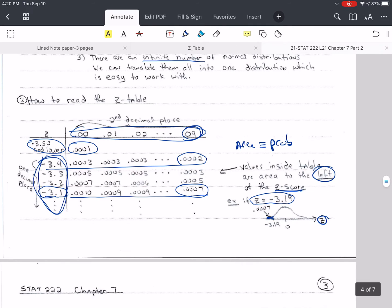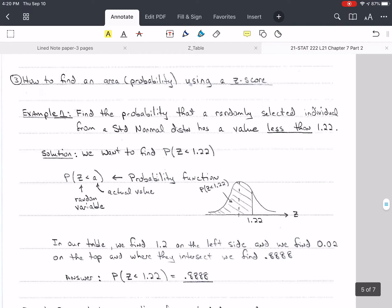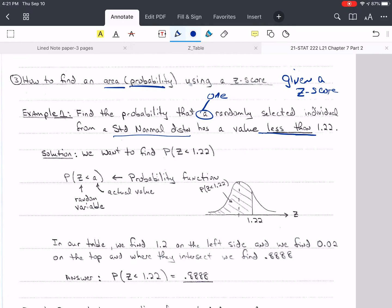So let's do some examples so that we can get used to looking up these values. So the first thing we're going to do is we're going to see how we can find an area or a probability, the same thing in this case, using a z-score. So we're being given or provided a z-score, and we want to find an area or a probability. So find the probability that a randomly selected individual from a standard normal distribution has a value less than 1.22. So the way I'm going to ask the questions are different, but they mean the same thing. They give you the same answer. So less than is what we have in our table.